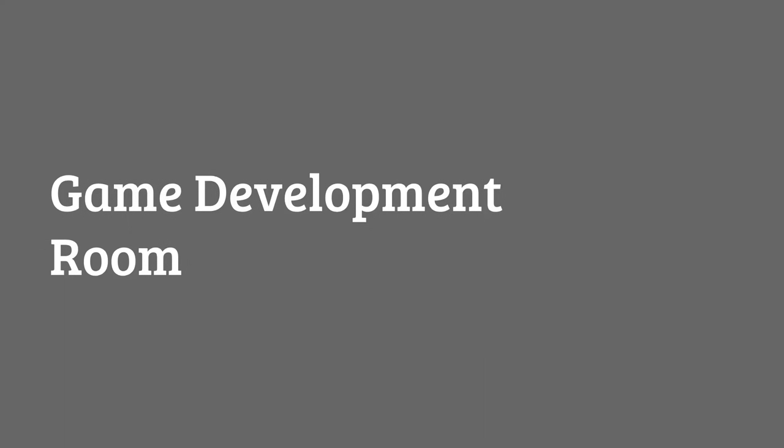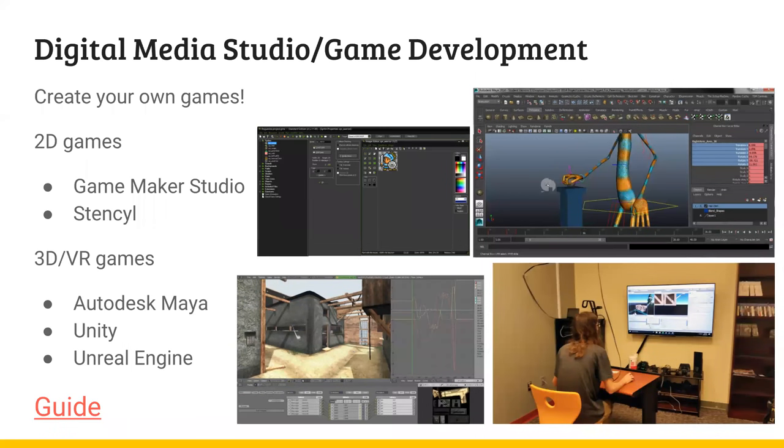Now let's move to the game development room. It's not technically a part of the Makerspace but they're very closely entwined. The game development room is located in the same area as the Makerspace, right next to the Digital Media Studio. You can reserve it through the reserve-a-study-room booking system — that link is available on the library homepage. You can develop games using a variety of software available in the Digital Media Studio and in the game development room itself. You can create 2D games using Game Maker Studio or 3D games using Blender or Autodesk Maya.